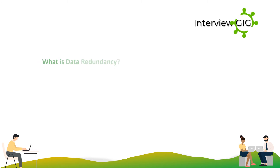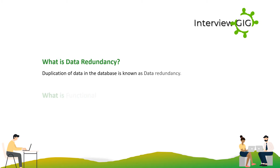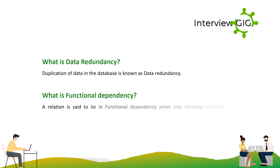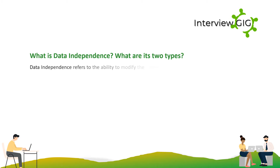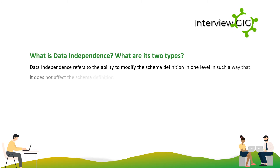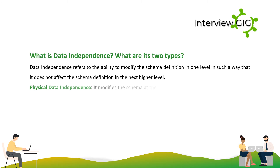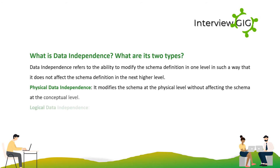Data redundancy is the duplication of data in the database. A relation is said to be in functional dependency when one attribute uniquely defines another attribute. Data independence refers to the ability to modify the schema definition at one level in such a way that it does not affect the schema definition at the next higher level. Physical data independence modifies the schema at the physical level without affecting the schema at the conceptual level.